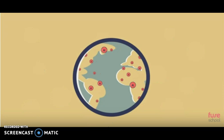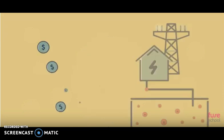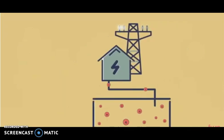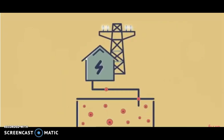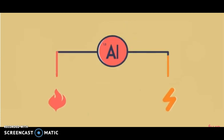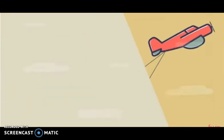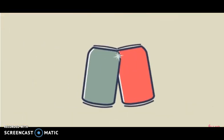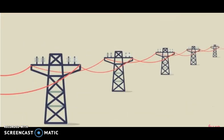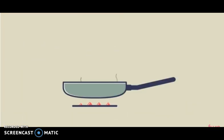Aluminium is the most abundant metal on earth; however, it is expensive because a lot of electricity is used to extract it. Aluminium conducts heat and electricity well, has a low density, and does not corrode. This makes it very useful for aeroplanes, drinks cans, electricity cables, and cooking pans.